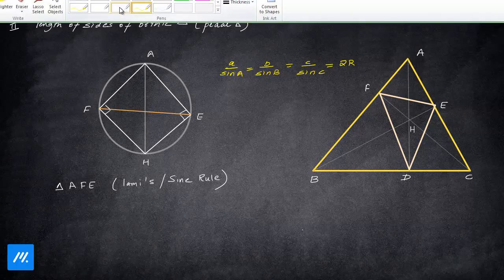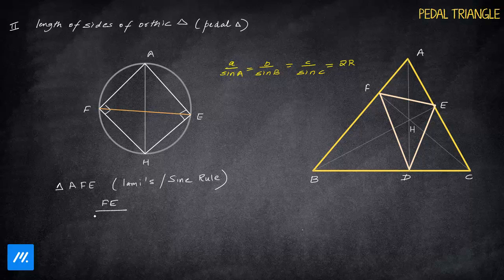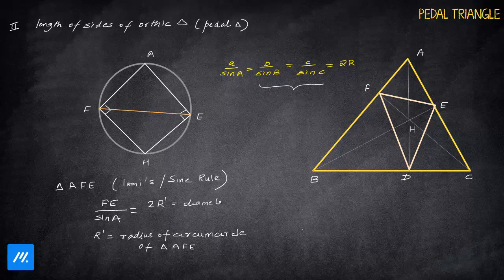So sine rule: a by sine A is equal to b by sine B is equal to c by sine C is equal to 2R, where R is the radius of the circumcircle of the triangle ABC. So if we apply this to triangle AFE, what can we do then? FE by sine A should be equal to 2R.